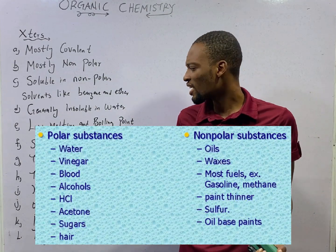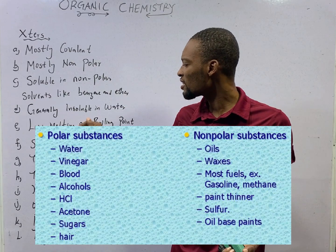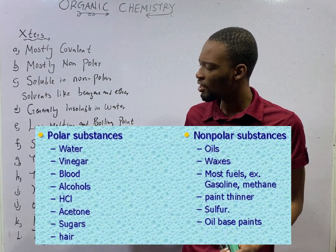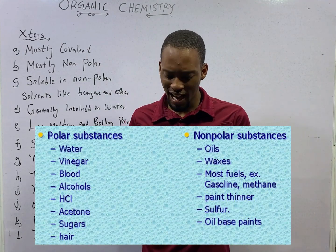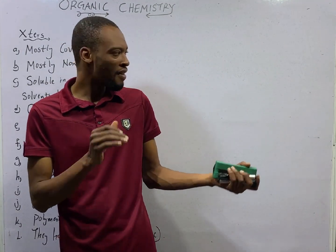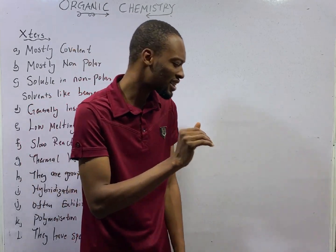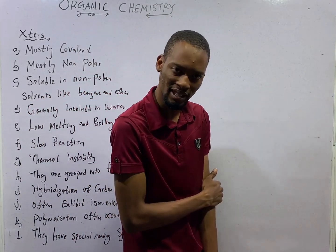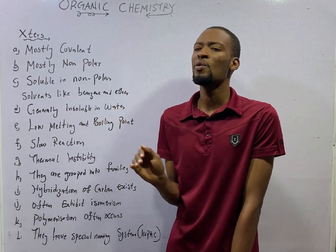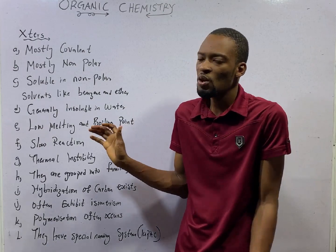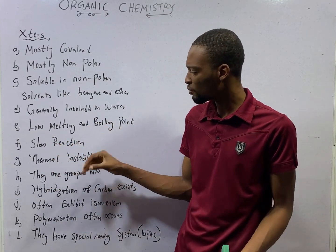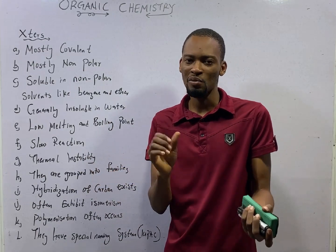Organic compounds generally have low melting and boiling points — this is a general characteristic. But compounds like alkanes have high boiling points despite the fact that they are organic compounds, and this is as a result of hydrogen bonding. Any organic compound that has a hydrogen bond O-H will have a high boiling point. So organic compounds generally have low boiling and melting points, except for those with hydrogen bonding.